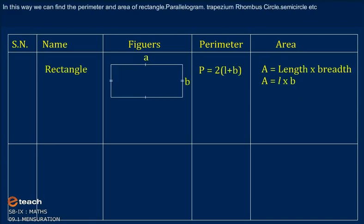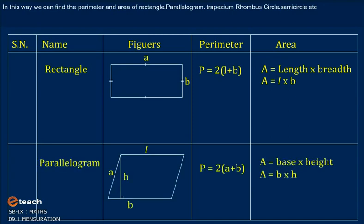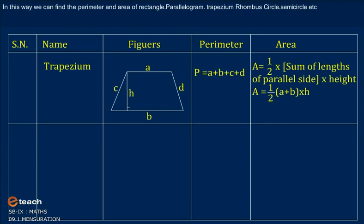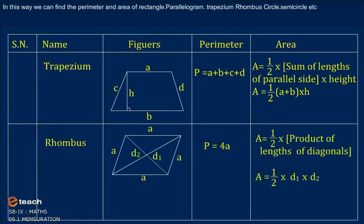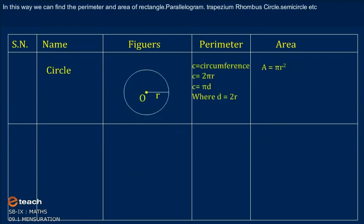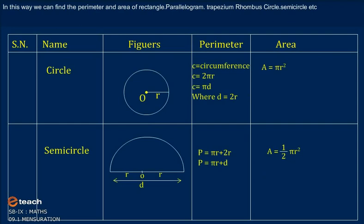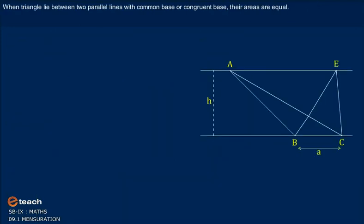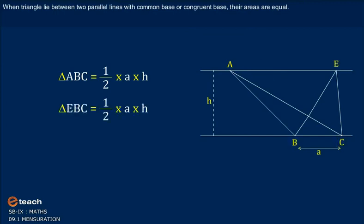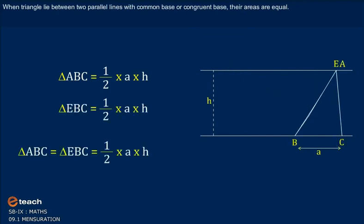In this way, we can find the perimeter and area of a rectangle. Where a triangle lies between two parallel lines with a common base or congruent base, their areas are equal.